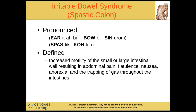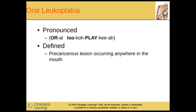And then we have IBS or irritable bowel syndrome. This is an increased motility of the small or large intestinal wall resulting in abdominal pain, flatulence, nausea, anorexia, and the trapping of gas throughout the intestines. And then we have oral leukoplakia, which is a precancerous lesion occurring anywhere in the mouth.